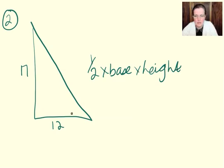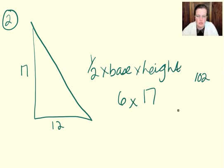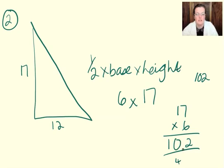So, half times 12 is 6 times the height is 17. If I do that in my head, I think that's 102. But don't do things in your head if you're in any doubt. 7 times 6 is 42. 1 times 6 is 6 and 4 is 10. So, 102 centimeters squared.